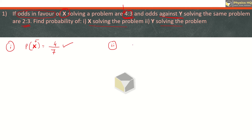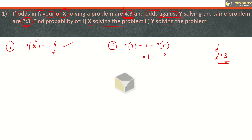Let y be the event that y can solve the problem. Odds against y — the number 2 is to 3 — tells you that if we need to solve the problem 5 times, it will not be solved 2 times. So the probability of y solving the problem will be 1 minus probability of y not solving the problem, which is 1 minus 2 by 5, which is 3 by 5.